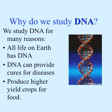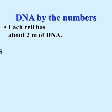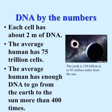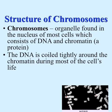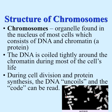Each cell has about two meters of DNA. The average human has 75 trillion cells, meaning the average human has enough DNA to go from the Earth to the Sun 400 times.